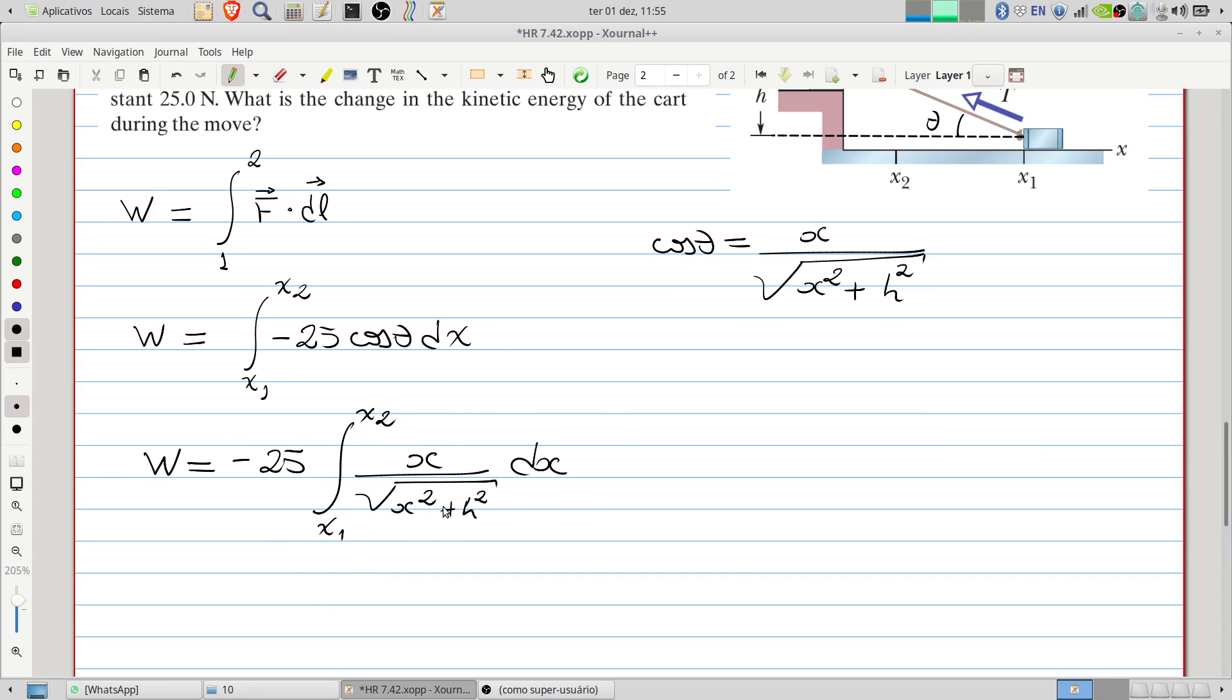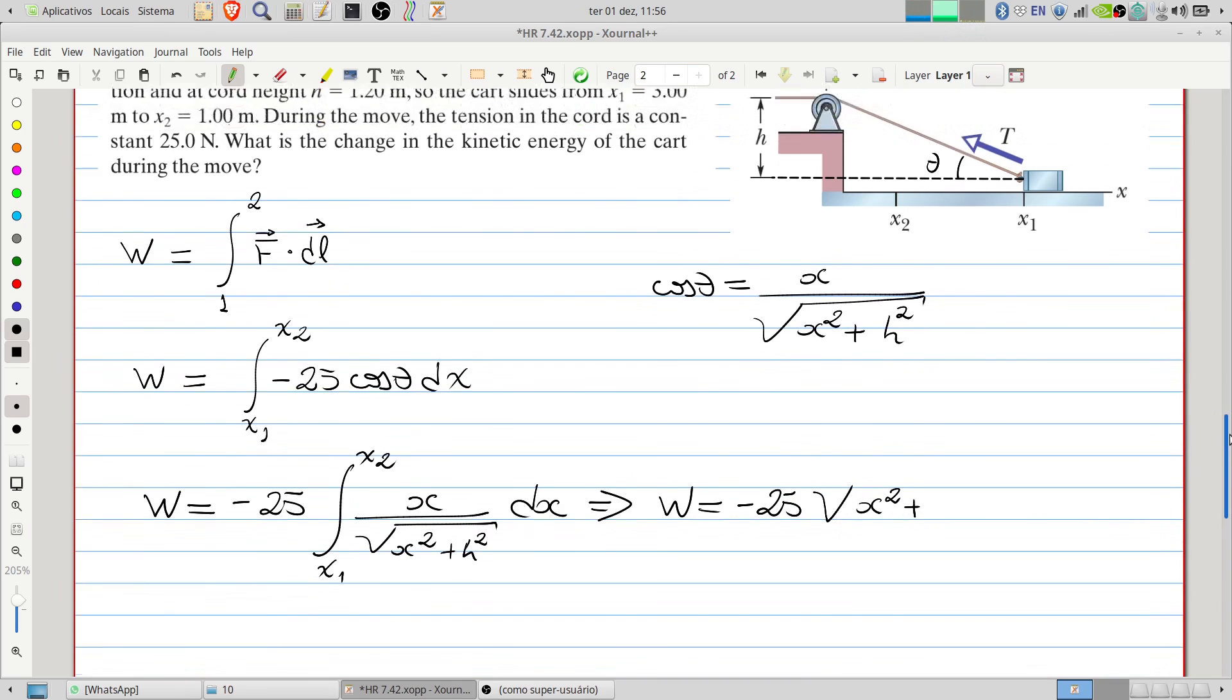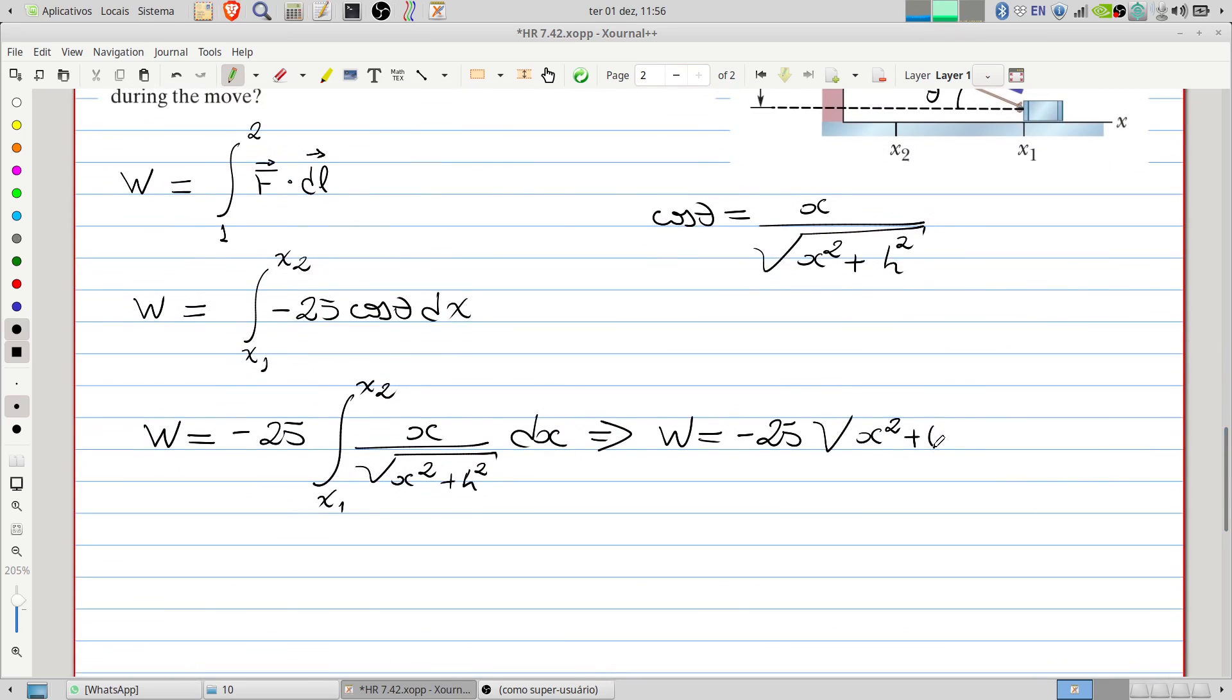It's necessary to find the result of this integral. It's not difficult in this case. The work W will be minus 25 multiplied by the square root of x squared plus h squared, evaluated from point x1 to x2.